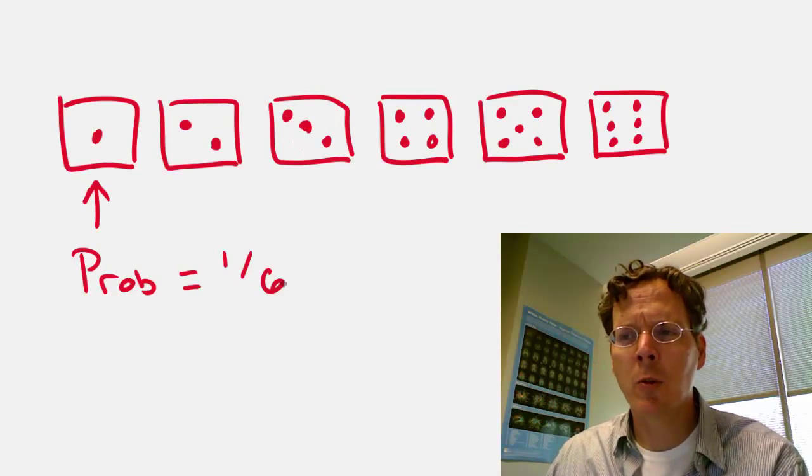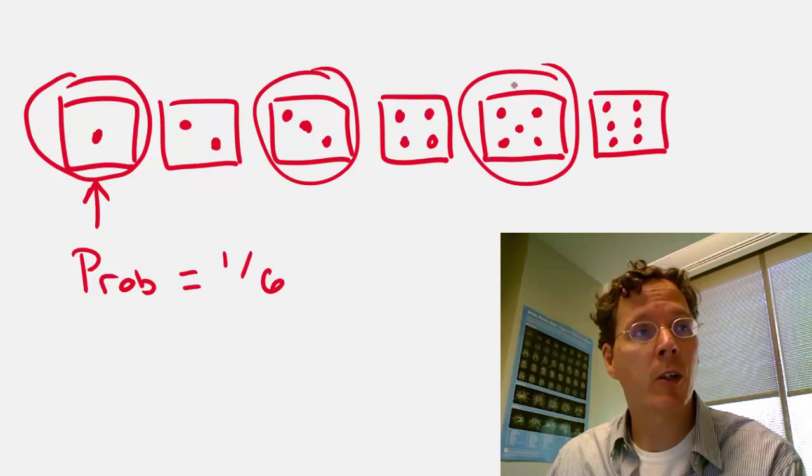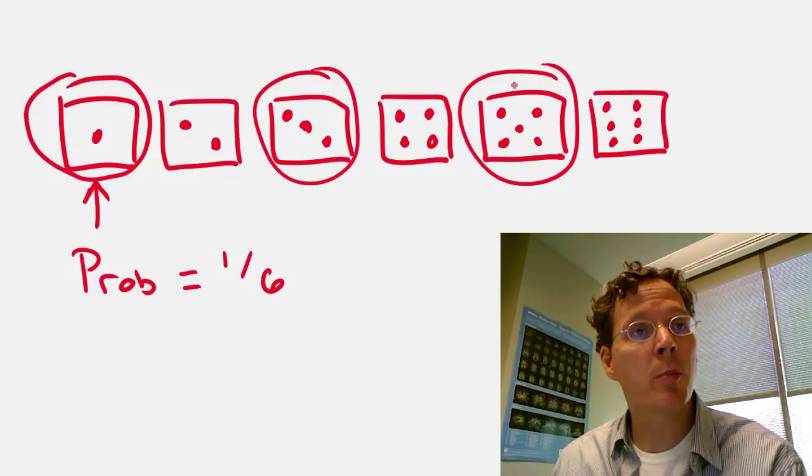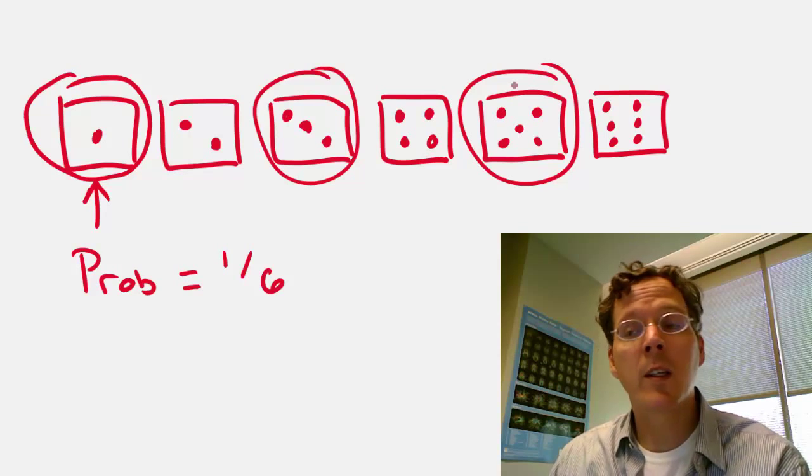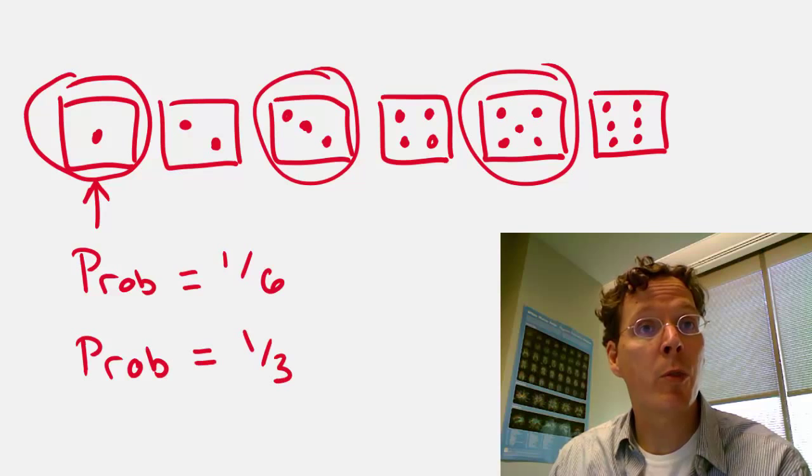So someone rolled a die in a way that you couldn't see, and they told you that a 1, 3, or 5 occurred. Conditional on this new information,